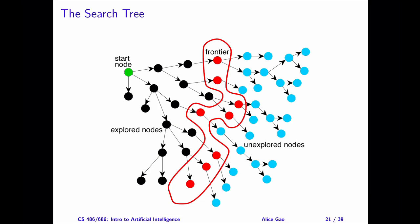We do this by maintaining a frontier of paths from the initial state. The frontier contains all of the paths that are available for exploration. In the beginning, the frontier starts with the trivial path containing the initial state and no edges. As the search proceeds, the frontier expands into the unexplored region until we encounter a goal node.